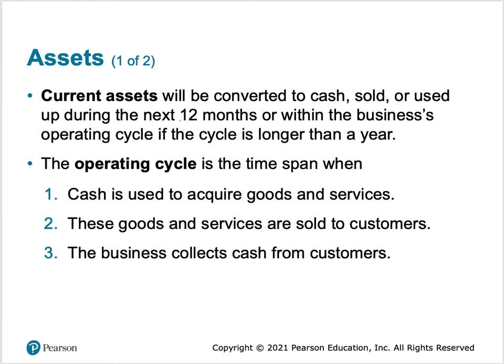Most things fall within a less-than-12-month operating cycle. But there might be longer-term instances, such as luxury goods or high-value items like expensive diamonds that a dealer might hold for longer than a year before converting, selling, and collecting the cash.